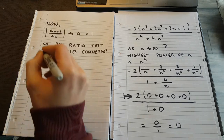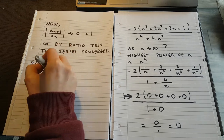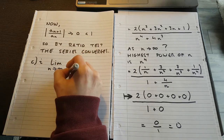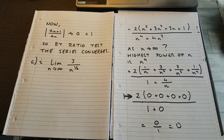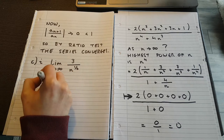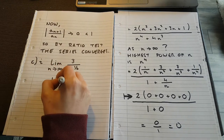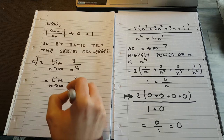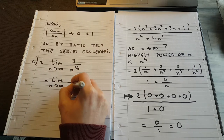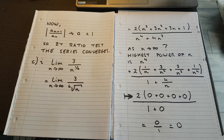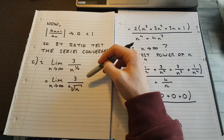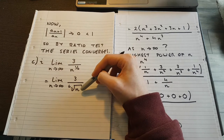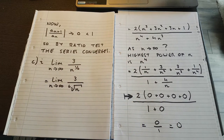So C part 1: we want to know the limit as n goes to infinity of 3 over n to the power of 1/6, which is the sixth root of n. What happens on top? Well, nothing happens on top — 3 doesn't care what n is. What happens to the sixth root of n as n goes to infinity?